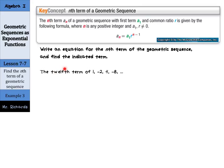Write an equation for the nth term of the geometric sequence and find the indicated term. We're looking for the twelfth term of 1, -2, 4, -8. Our first step is to find the common ratio. If we rewrite this 1, -2, 4, -8, we have -8 over 4, which is -2. 4 over -2 is also -2. And -2 over 1 is -2. So we have a common ratio of -2, which is really important.